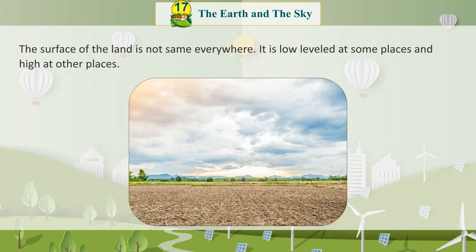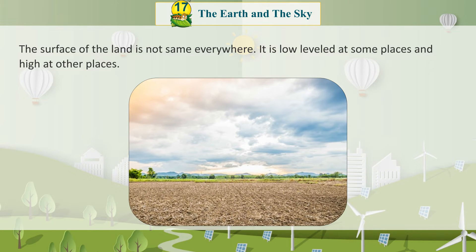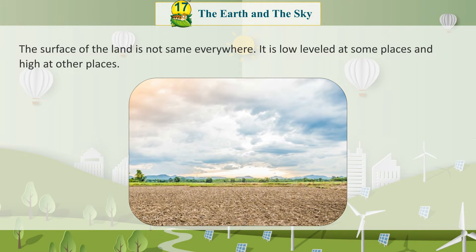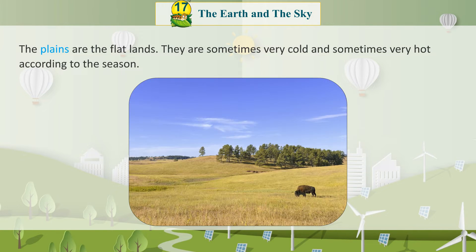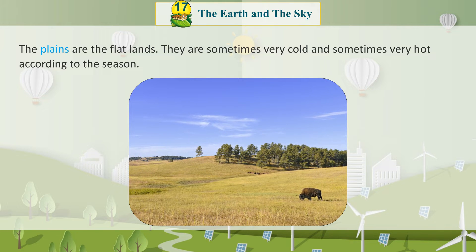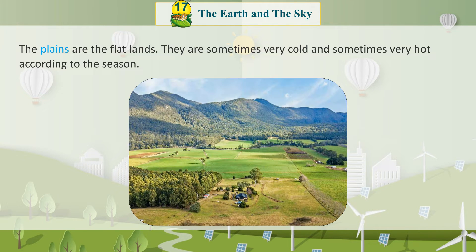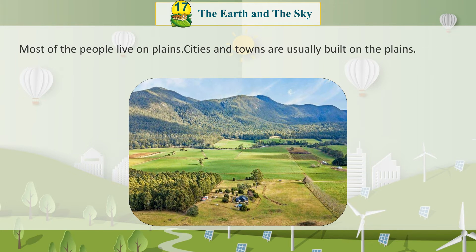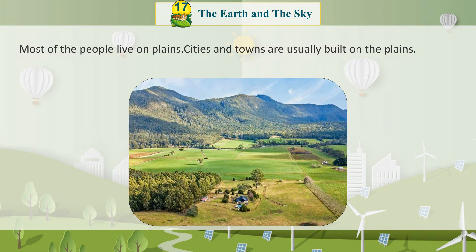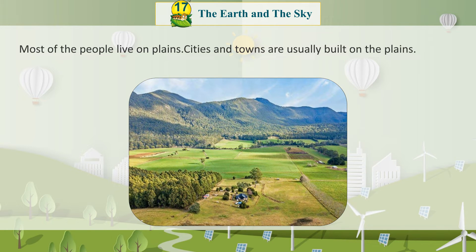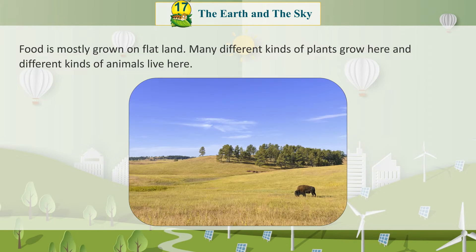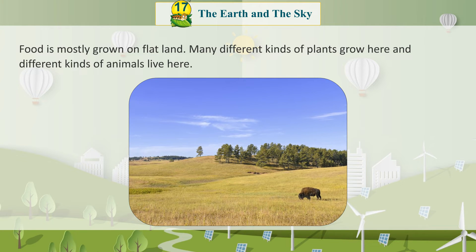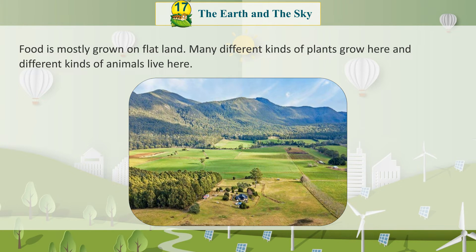Land: The surface of the land is not the same everywhere. It is low level at some places and high at other places. Plains are the flat lands. They are sometimes very cold and sometimes very hot according to the season. Most of the people live on plains. Cities and towns are usually built on the plains. Food is mostly grown on flat land.